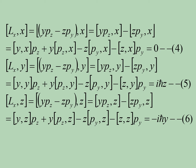Similarly, instead of x, if we do it with y, the commutation relation between Lx and y gives only one non-zero term: the commutation relation between Py and y, which equals minus iℏ. So we get [Lx, y] = iℏz.